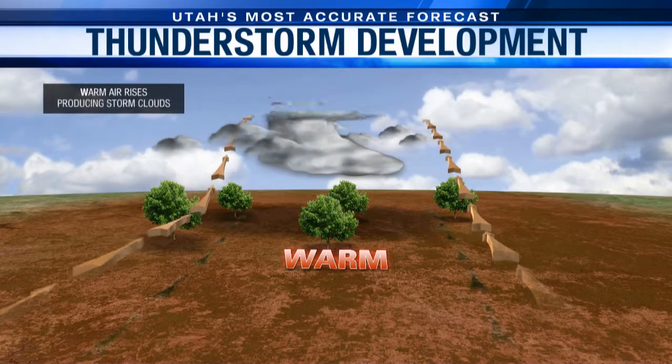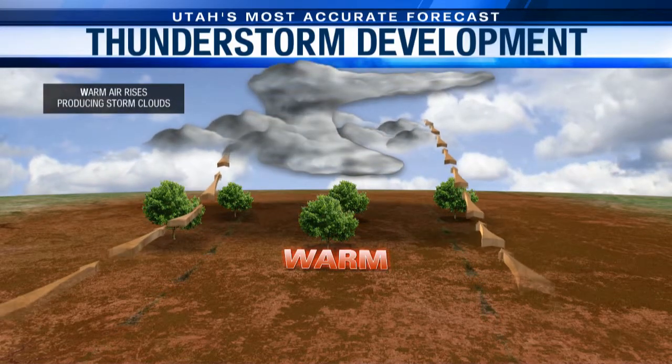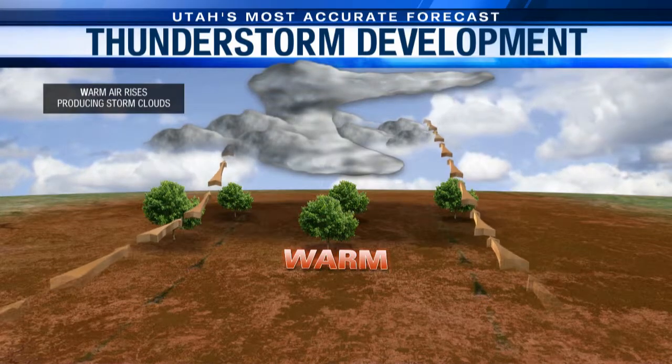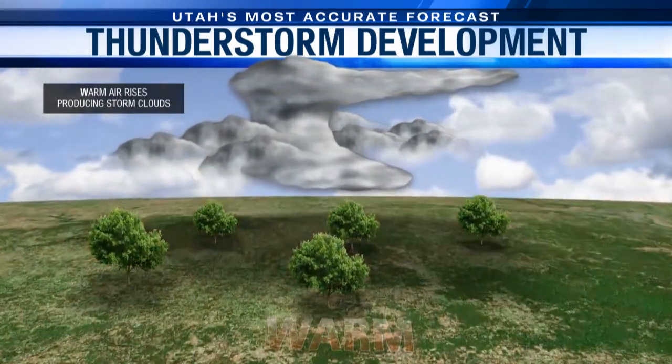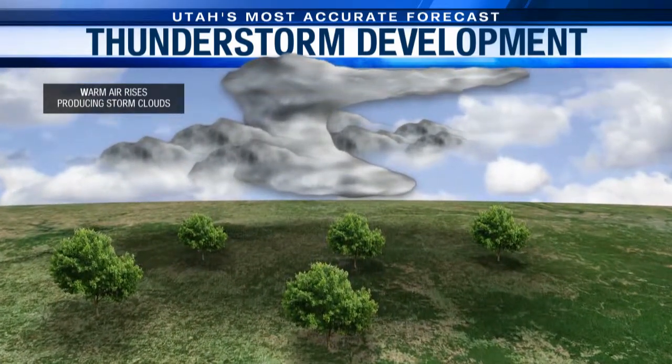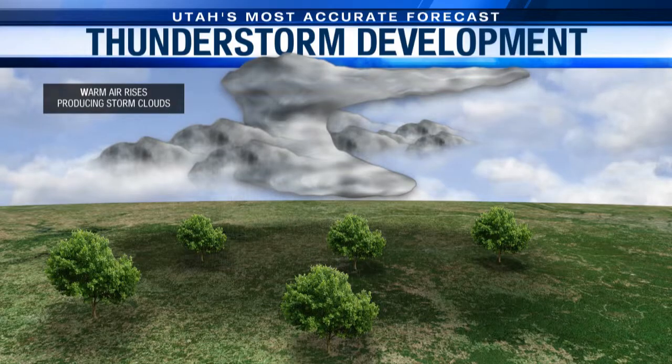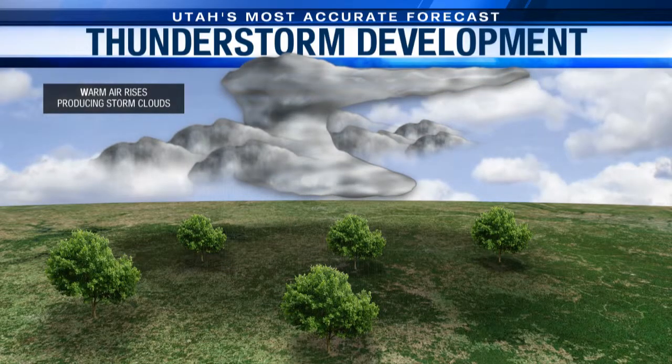When that happens, we get storm clouds. Our storm clouds don't just produce rain, thunder, and lightning — there's also significant wind associated with a thunderstorm.